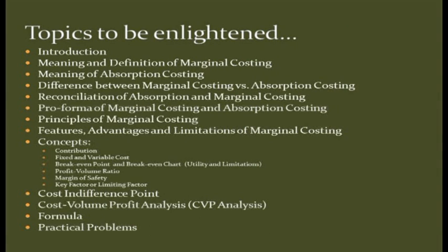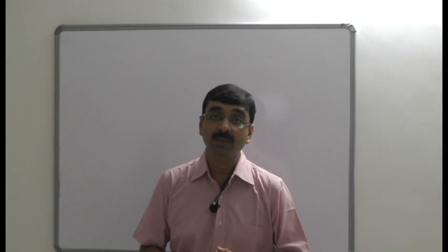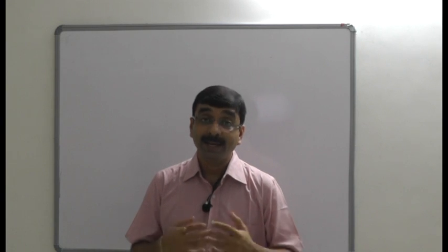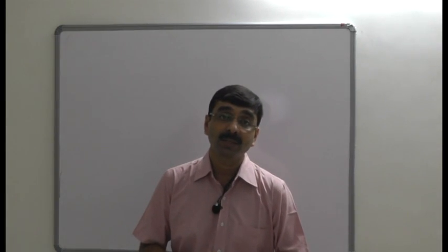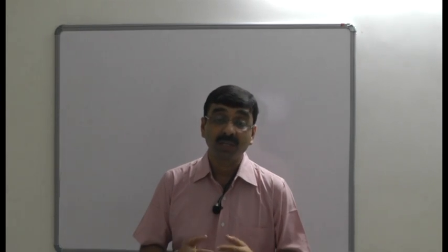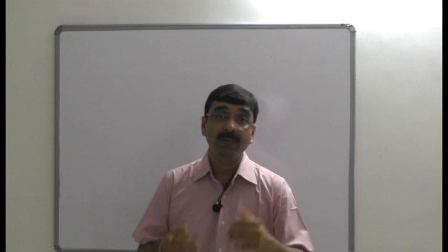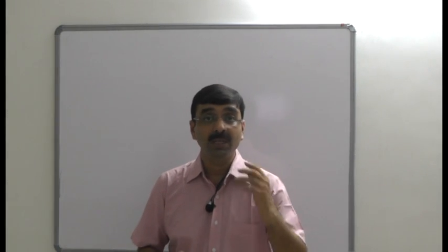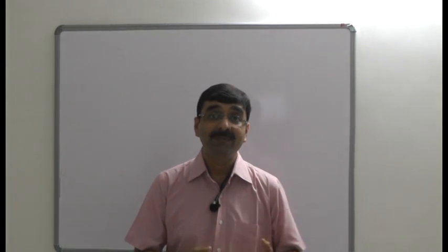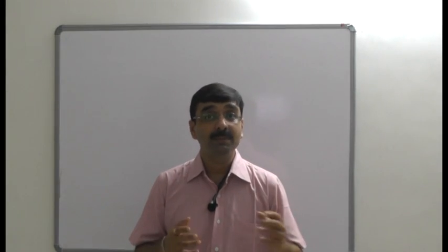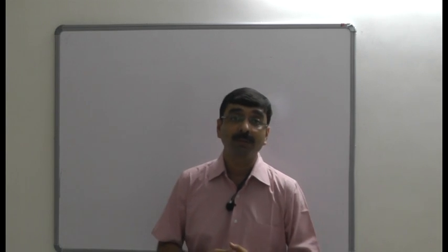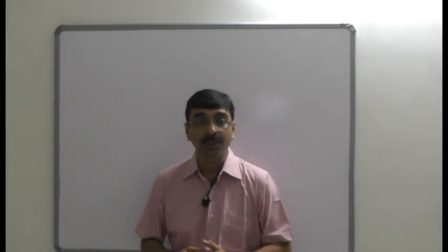There are many topics to be covered under this chapter: introduction, meaning and definitions, Absorption Costing, the difference between Absorption Costing and Marginal Costing, pro forma of Marginal Costing and Absorption Costing, Reconciliations, Principles, Features, Advantages and Disadvantages of Marginal Costing, Breakeven Point, Breakeven Chart, Contributions, Fixed Cost and Variable Cost, Profit Volume Ratio (PV Ratio), Margin of Safety (MOS), Key Factor or Limited Factor, and CVP Analysis.